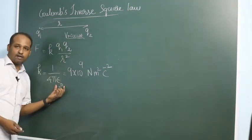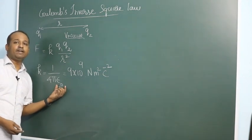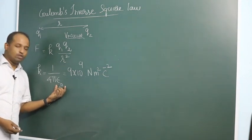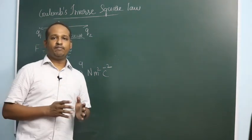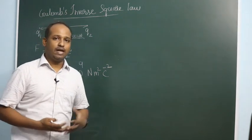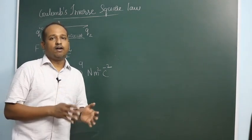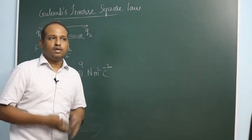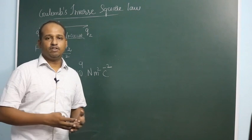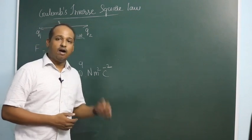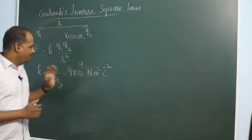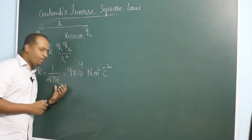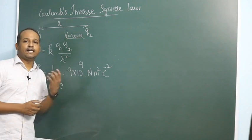Here this epsilon naught which is called permittivity of vacuum. So permittivity of a material, or in general, permittivity is the ability to store electrical energy or the ability to produce dipoles. For this time we can say the property of the material to facilitate electrical interaction.